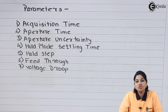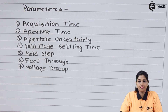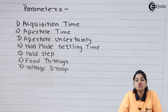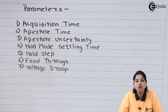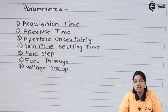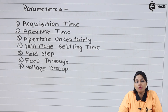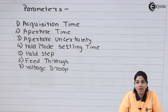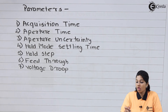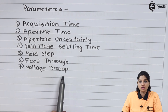The next parameter is voltage droop. As non-ideal capacitors are used in the circuit, during hold mode the value present on the capacitor does not remain constant — it decreases by a certain amount. That decrease in the output voltage on the capacitor during holding mode is called voltage droop.